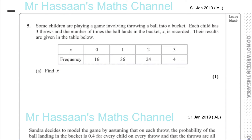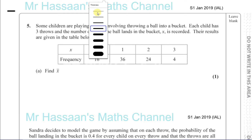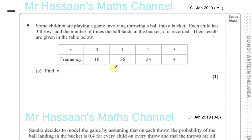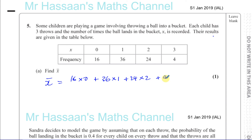We've got to find the mean number of times the ball landed in the bucket, x̄. We're going to find the total number of times the balls land in the bucket altogether and divide by the number of games. So x̄ is going to be 16 times 0, plus 36 times 1, plus 24 times 2, plus 4 times 3, divided by the total number of games: 16 + 36 + 24 + 4 = 80.